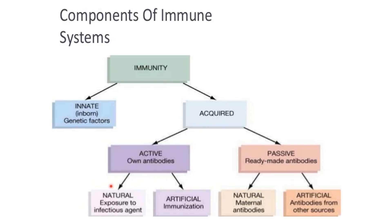Active immunity can be natural or artificial. Natural active immunity occurs due to exposure to an infectious agent. For example, exposure to measles causes the body to form antibodies against measles.